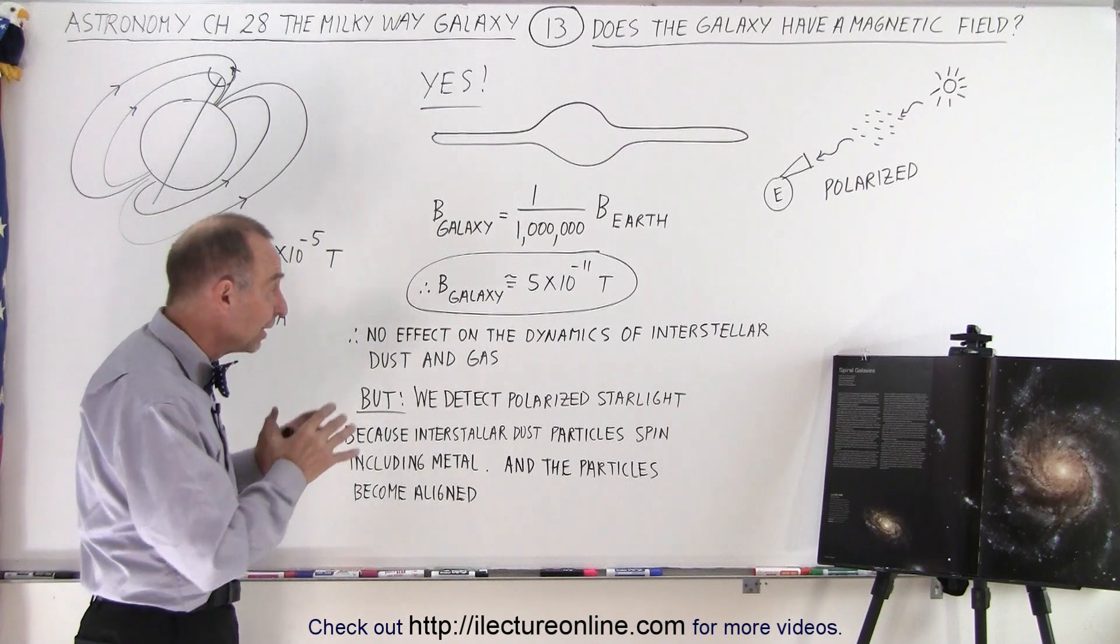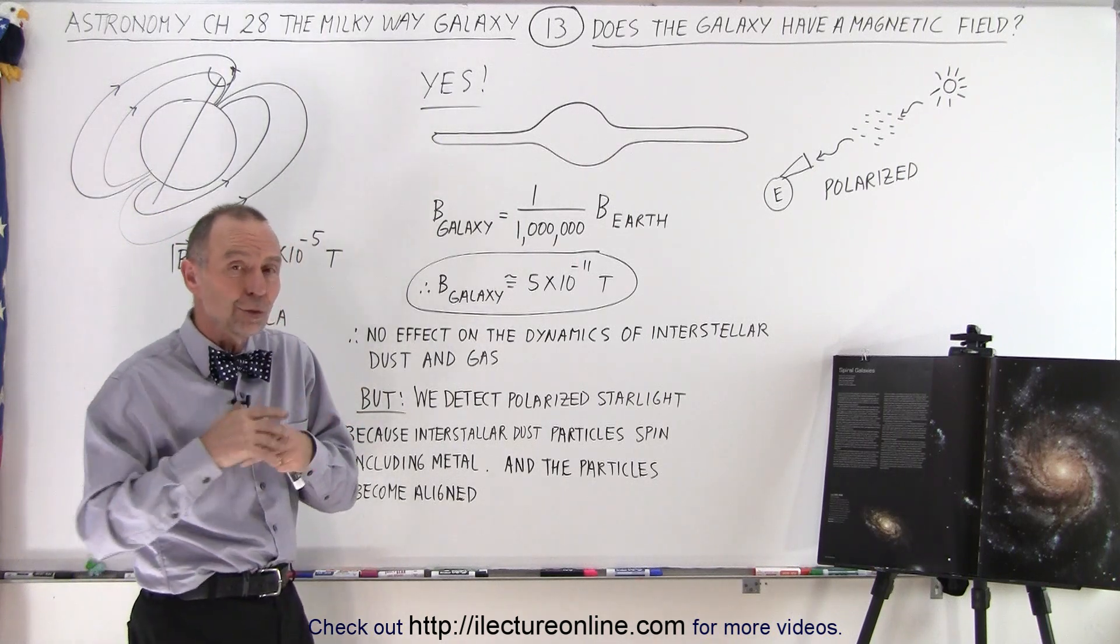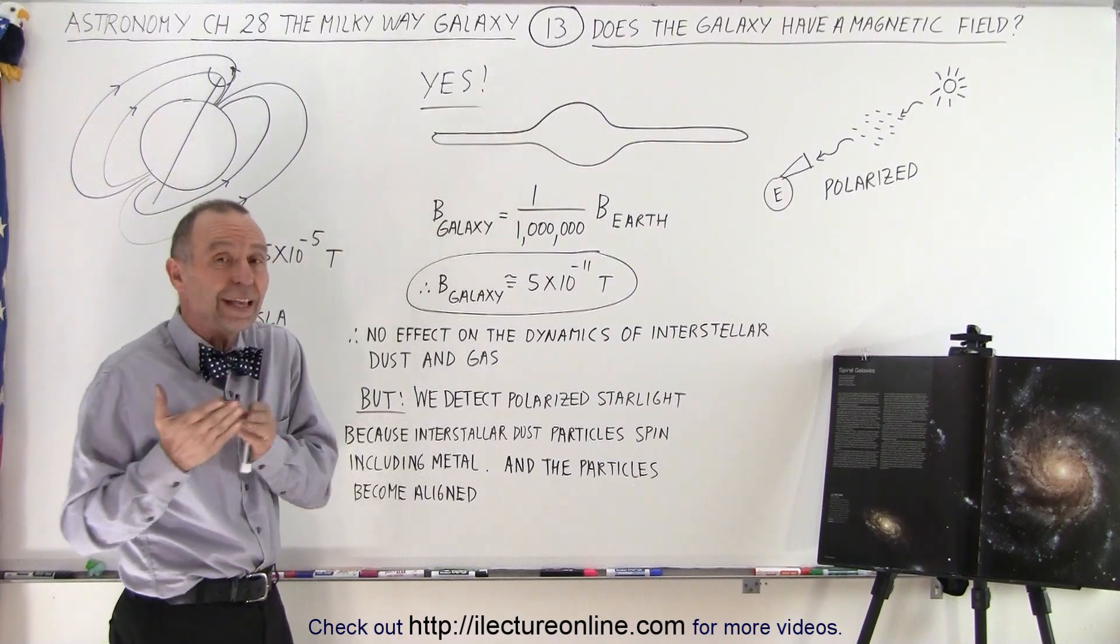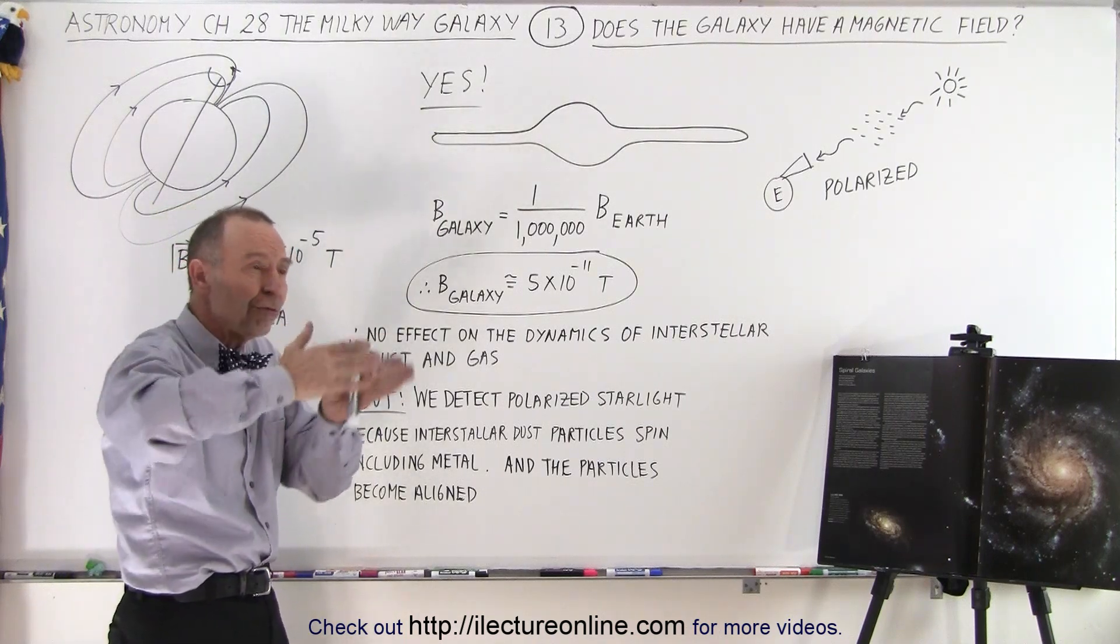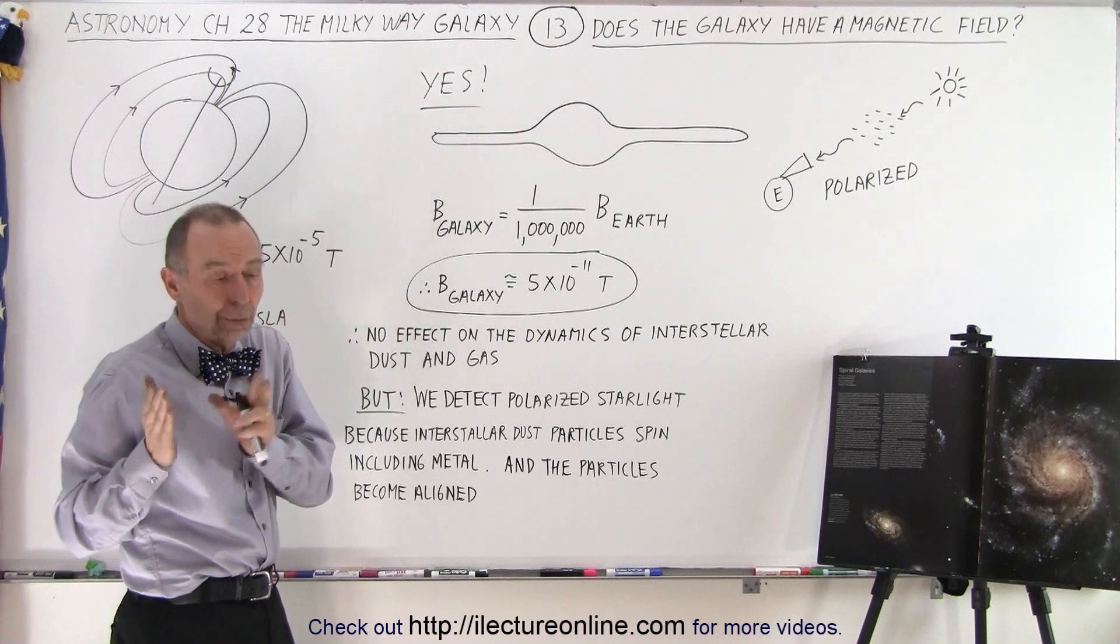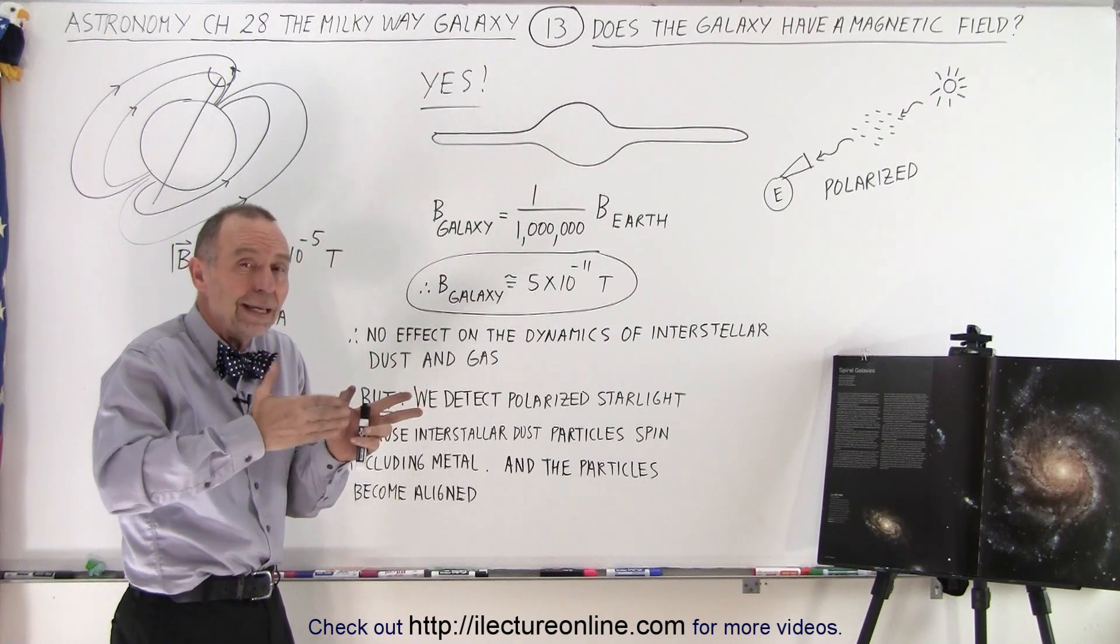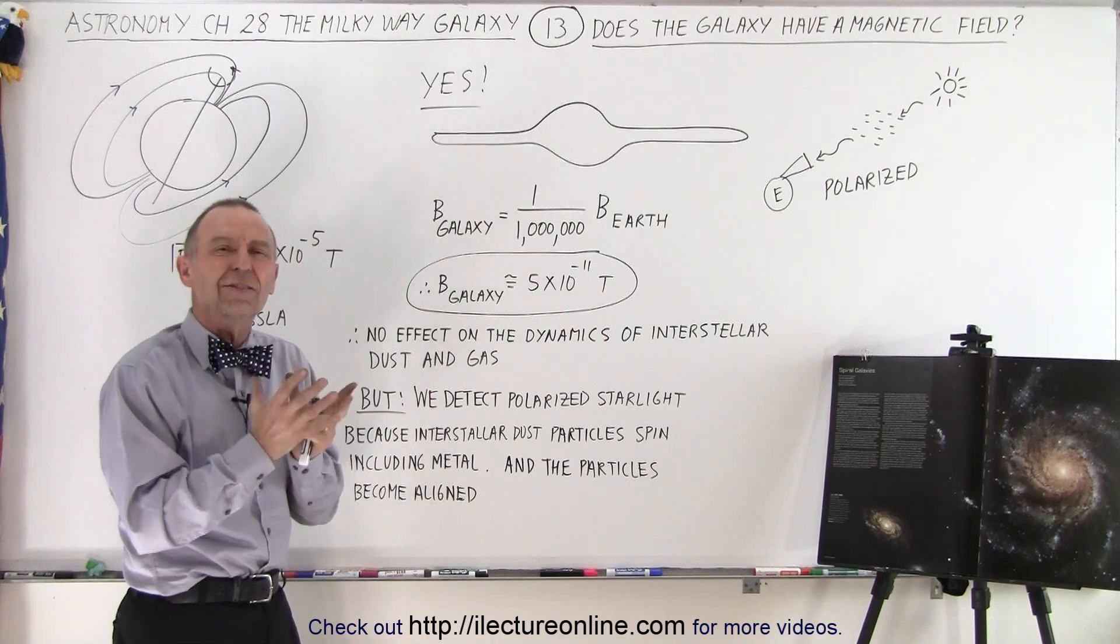And it turns out that we do notice, we do observe polarized starlight. And starlight can only be polarized if it goes through a uniform structure or a bunch of particles that are all aligned in the same way that then causes like a polarizing sheet.